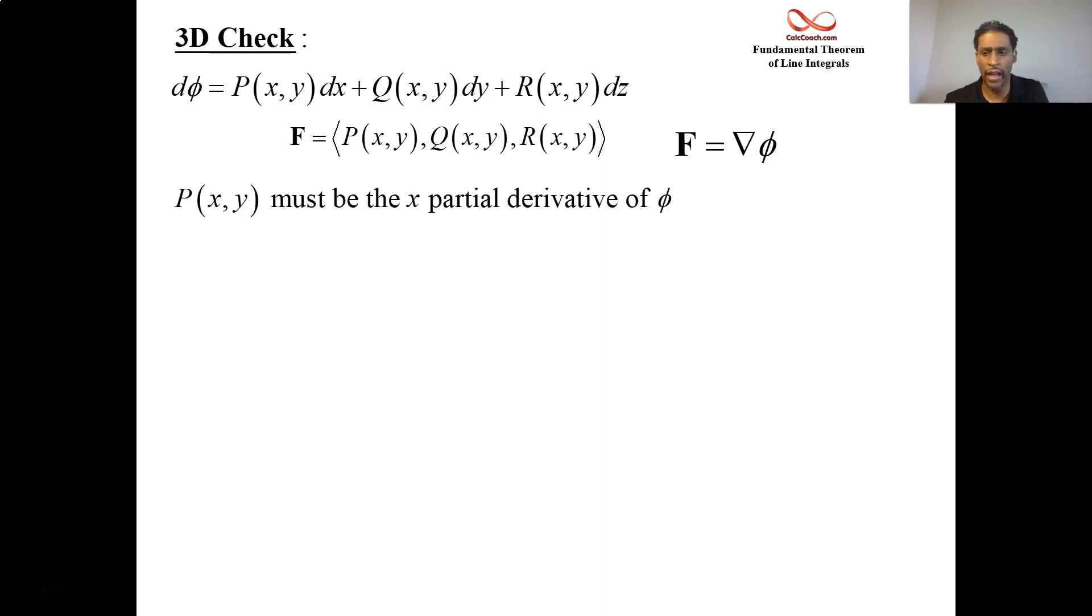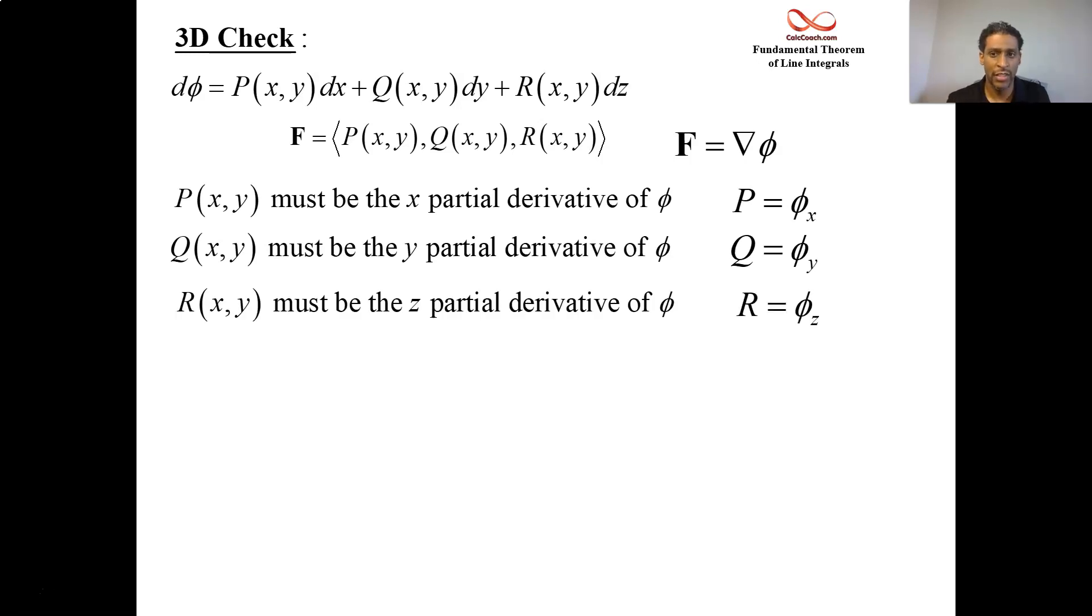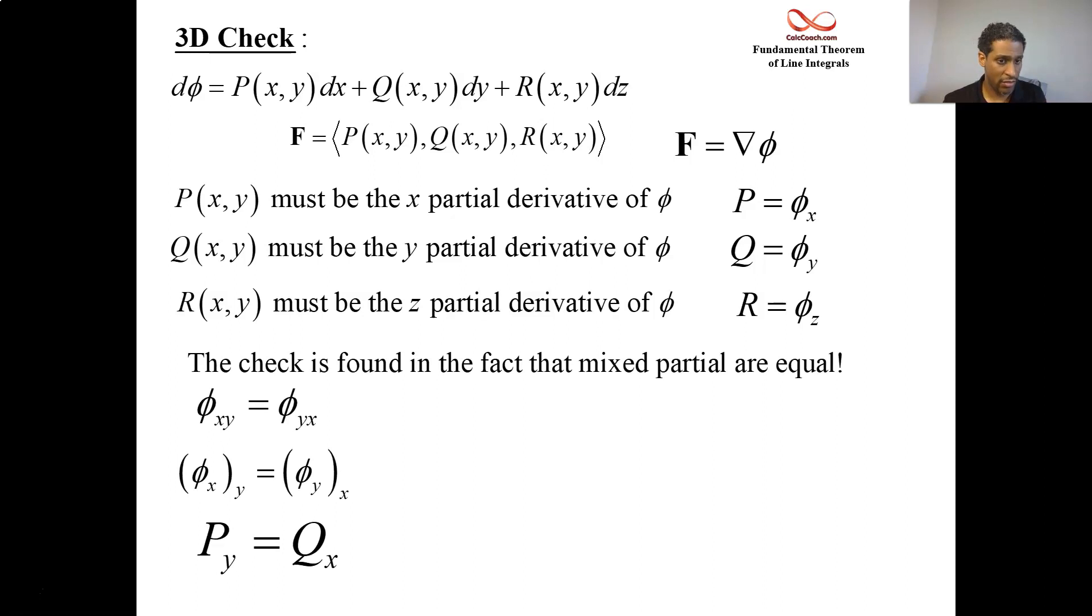That's for 2D. For 3D, it's a little more involved. You have a third component there, but it's the same kind of setup though. It even starts out the same. P is the x partial and q is the y partial. There's a new guy now, r, who's the z partial. For mixed partials, there'll be three different ways of mixing these. Your xy should be your yx. That's your p_y equals q_x. Your xz should be your zx. That is your p_z equals r_x. And your yz should be zy. And that is your q_z equals r_y. Three-part check. It involves the 2D check, but we have to do two more.